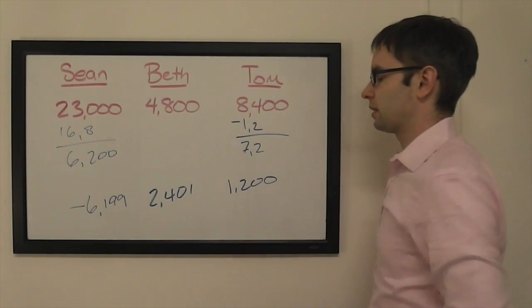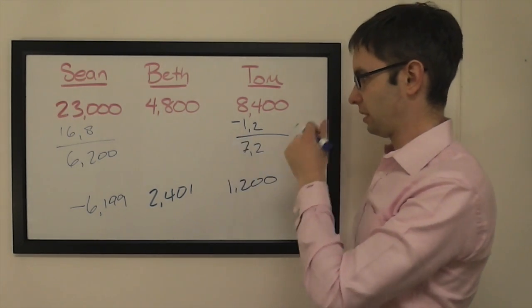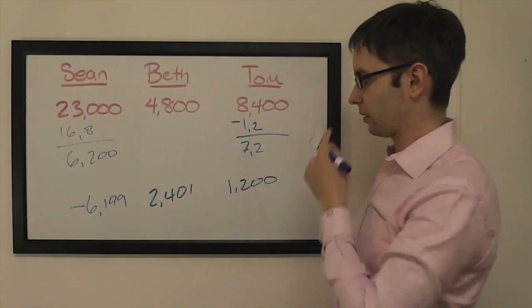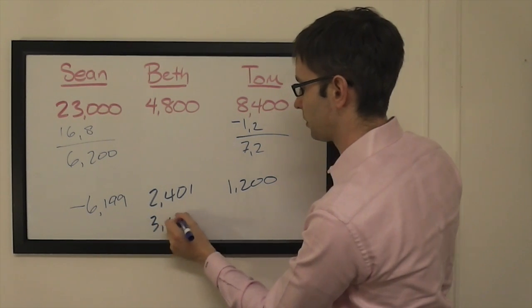I'd also consider covering a zero wager by Tom, so that difference is going to be 3,600. So 3,601. I prefer that.